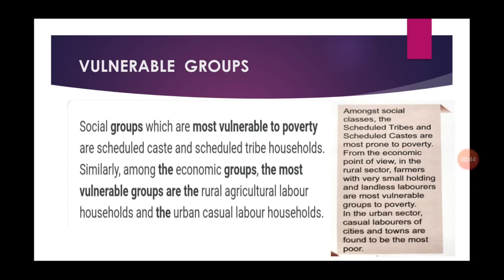Among social classes, scheduled tribes and scheduled castes are most prone to poverty. There are more chances for scheduled tribes and scheduled castes to become poor because they face problems of illiteracy, lack of medical facilities, and lack of other basic requirements. From the economic point of view, in the rural sector, farmers with very small holdings and landless laborers are the most vulnerable groups to poverty.